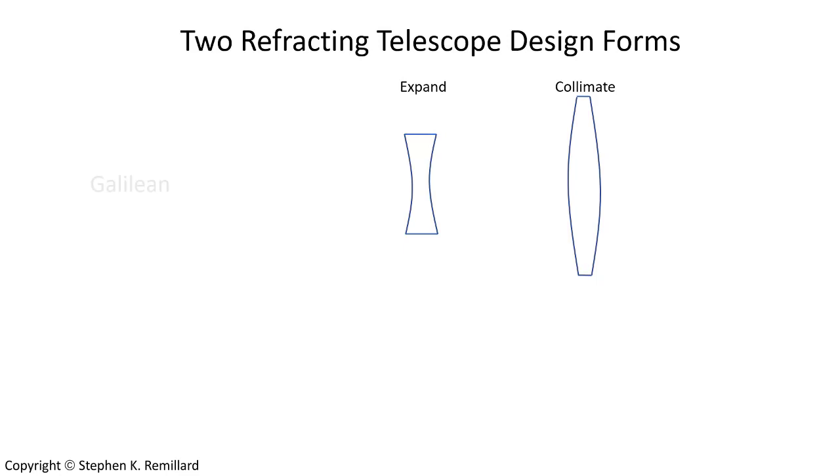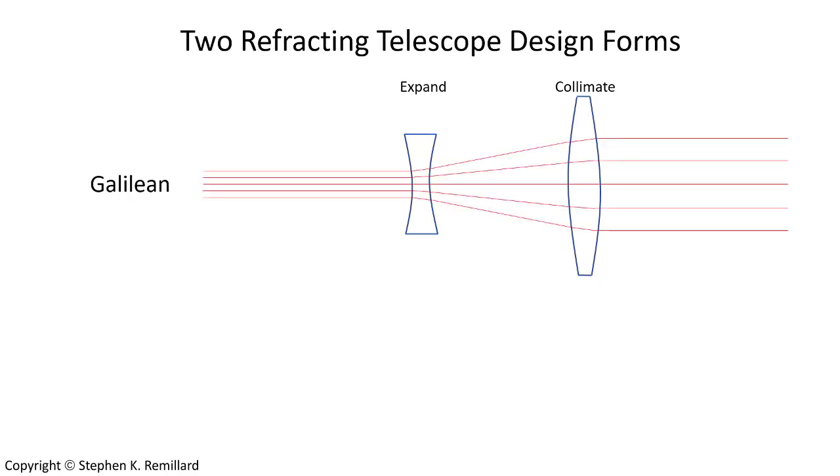The two types of beam expanders are the Galilean telescope, which brings in a beam of one size, expands it with the diverging expander, and then collimates it with the converging collimator.